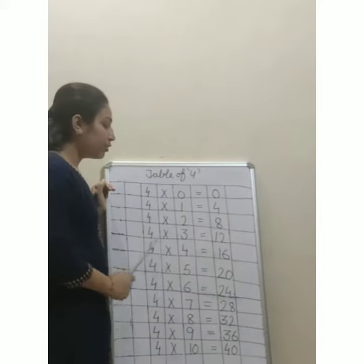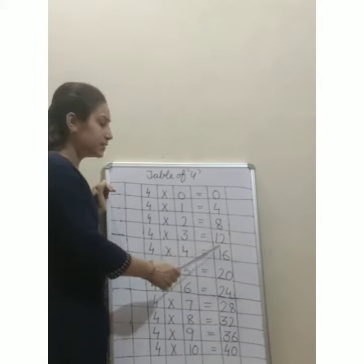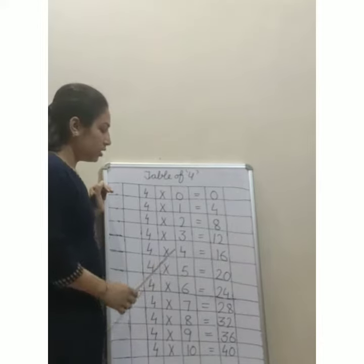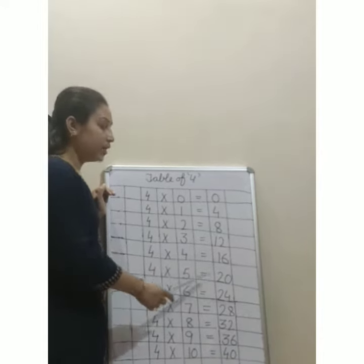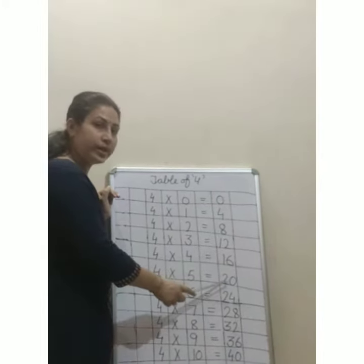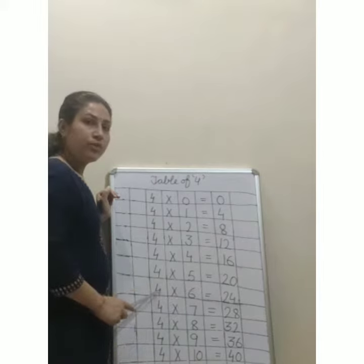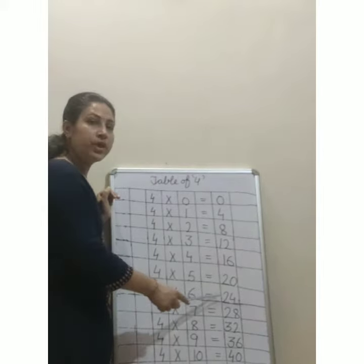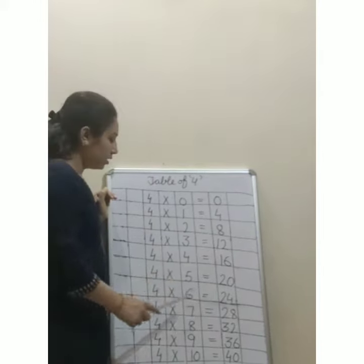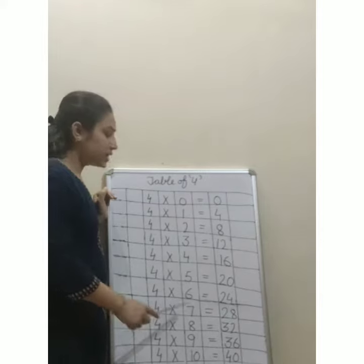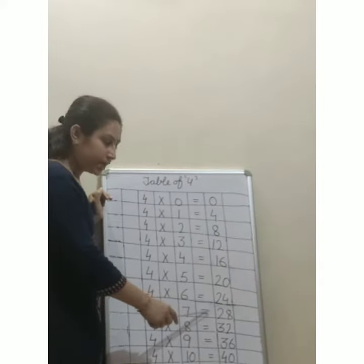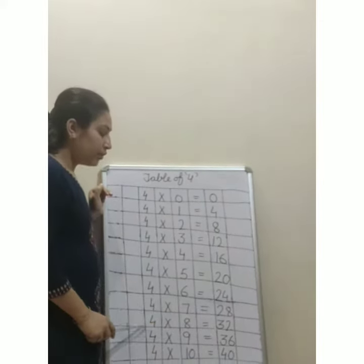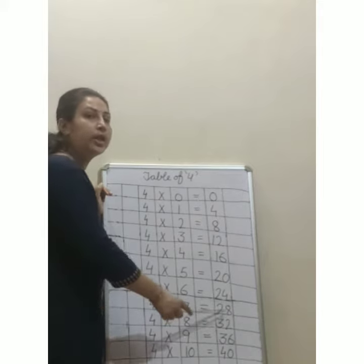4 fours are 16, 4 fives are 20, 4 sixes are 24, 4 sevens are 28.